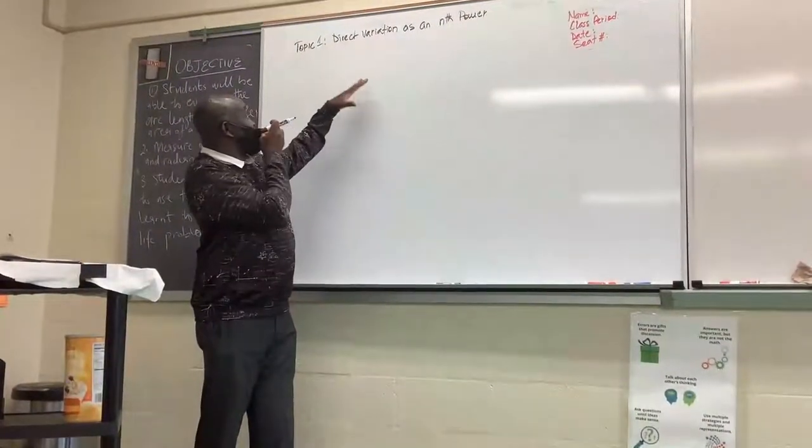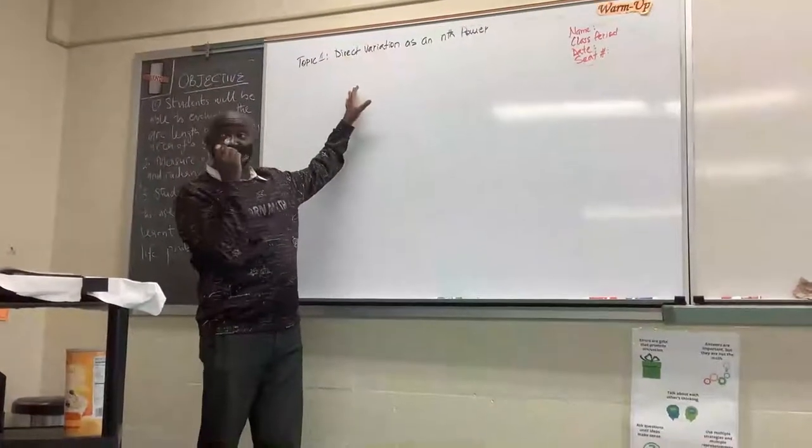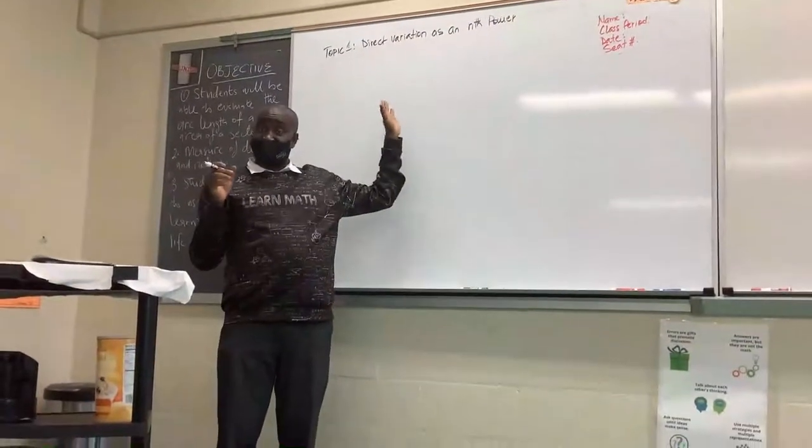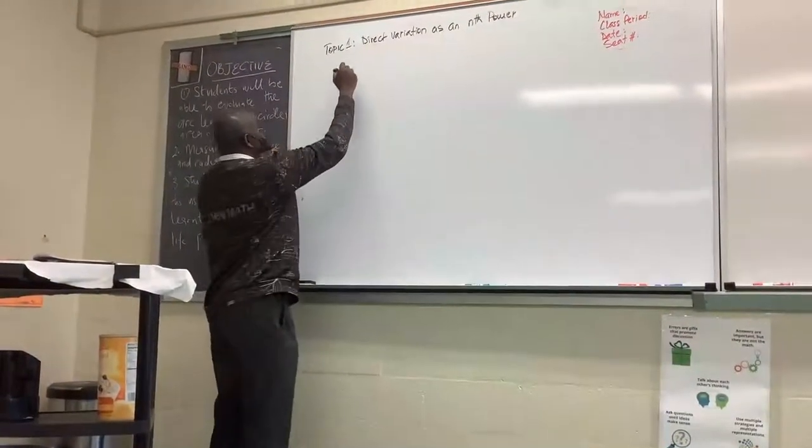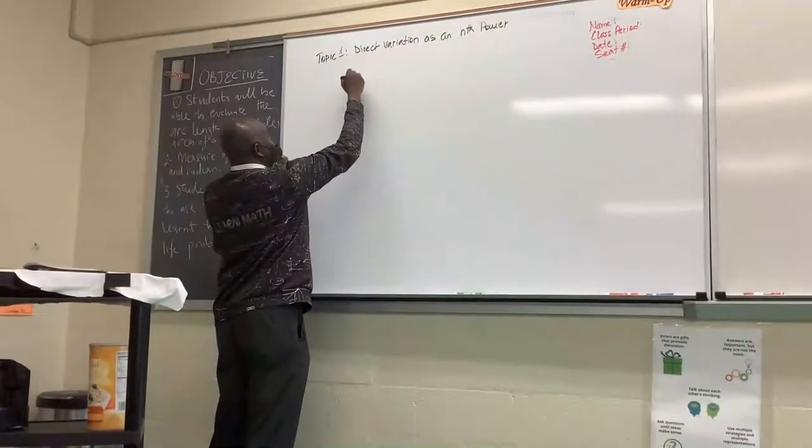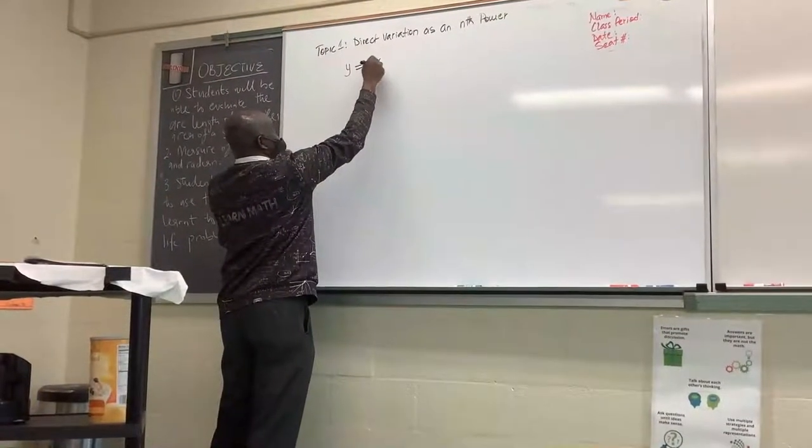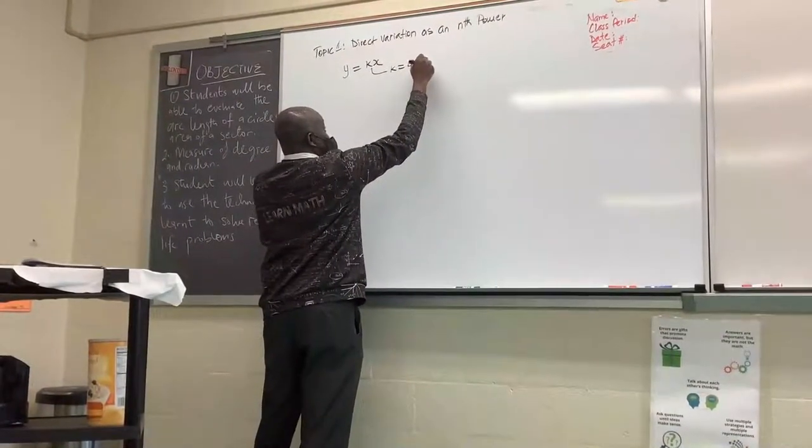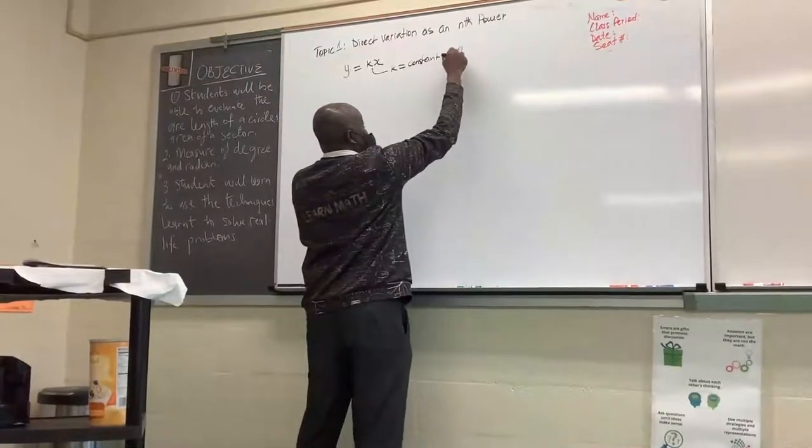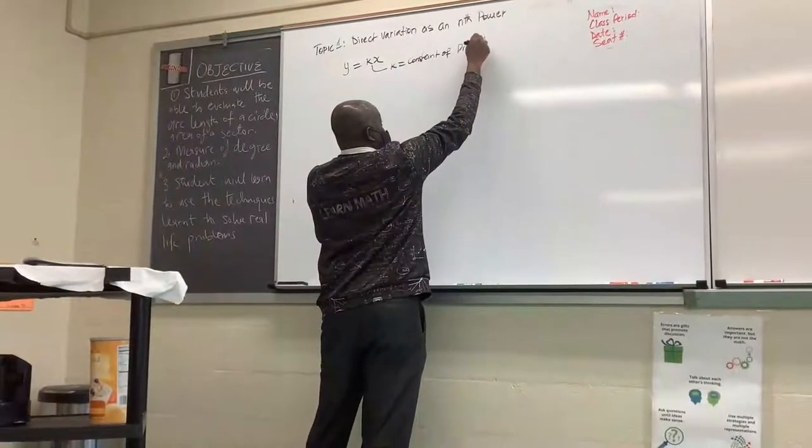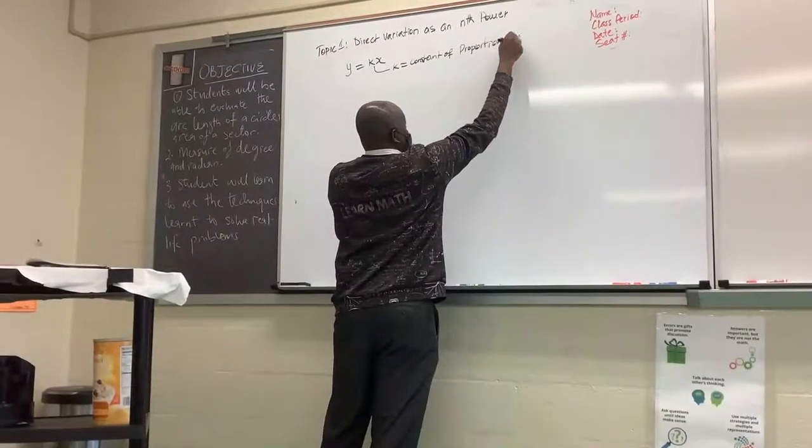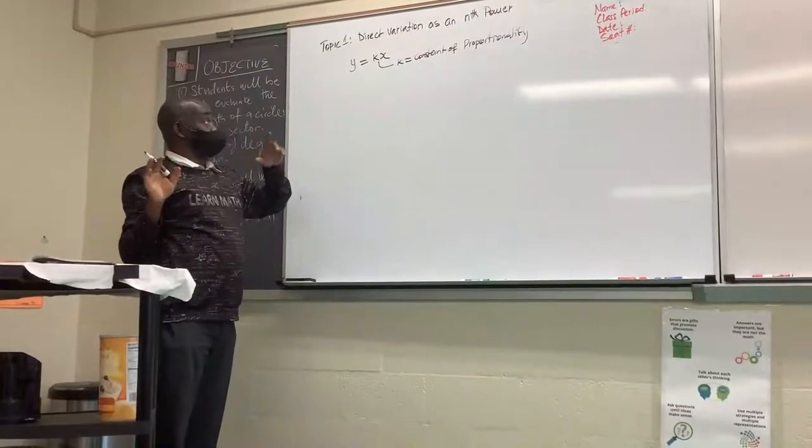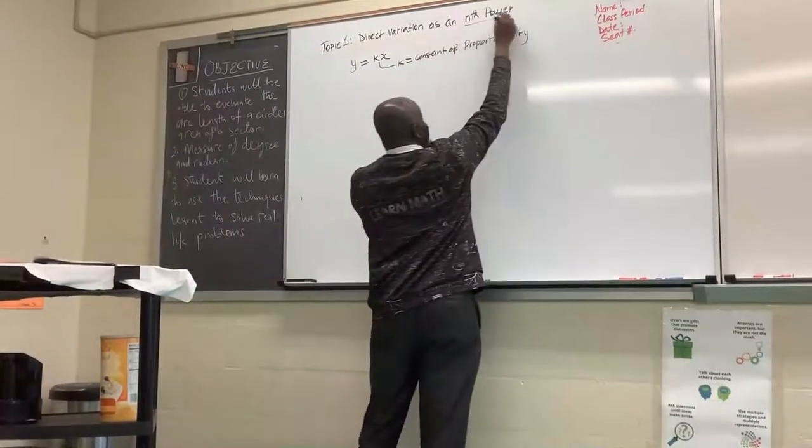In the other class we started variation and we looked at the formula for direct variation which was y equal to kx where k is constant of proportionality. So in this lesson we are going to look at another aspect of direct variation but this time around it is going to be n power.